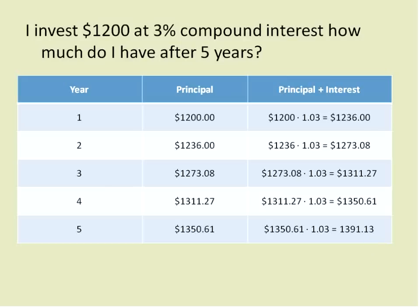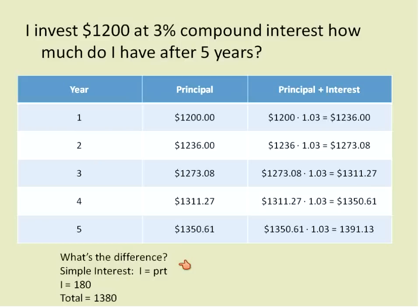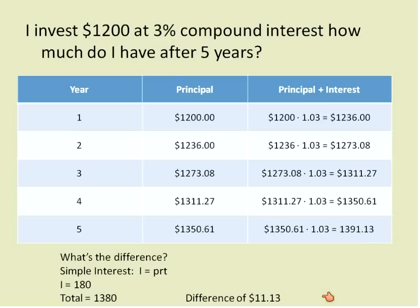Now, the question I asked at the beginning — is this worth it? Using just the simple interest equation, the interest equals the principal times the rate times the time: $1,200 times 0.03 times five years gives $180 interest, for a total of $1,380. Comparing that to $1,391.13, the difference is $11.13 over five years — that's the difference between compound interest and simple interest over five years.